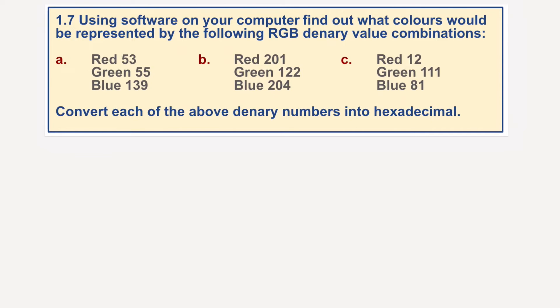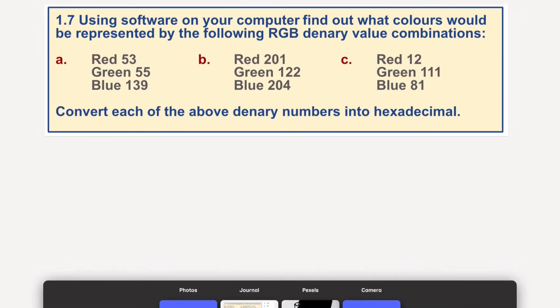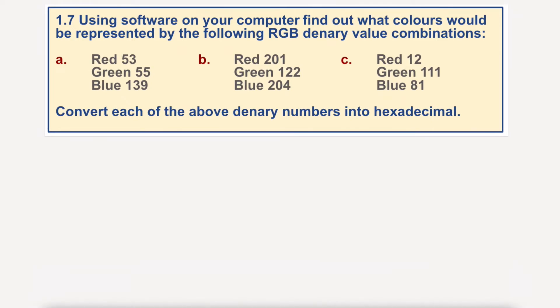Now if we come back into this, I'll do the middle one. We've got red 201, and we need to convert that into hexadecimal. So I'm going to go 1, 16, and none of these are higher. None of these have got a higher number than 256. So we've got to determine how many 16s go into each of these numbers, how many 1s go into the remainder. Let's take a look.